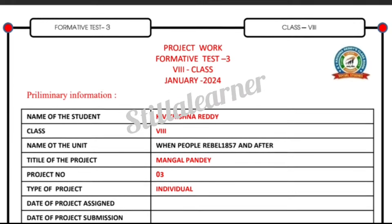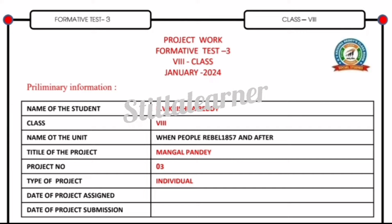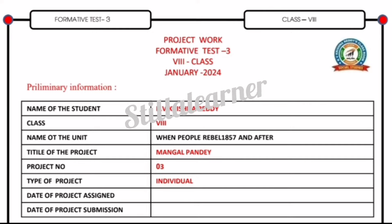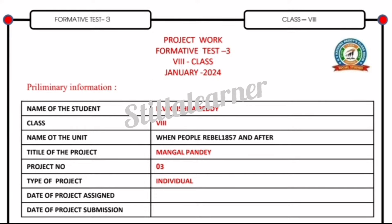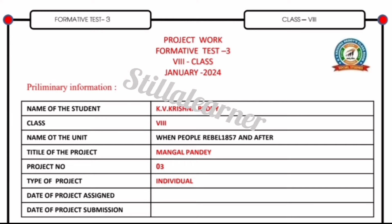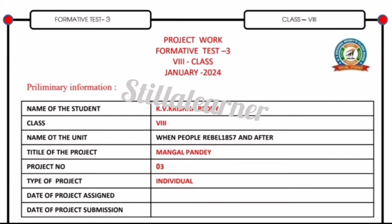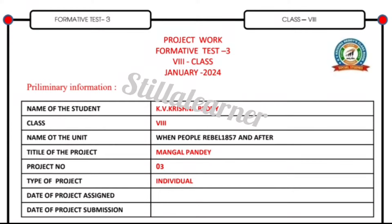First, write down: 'Project Work, Formative Test 3, Class 8, January 2024.' Next, under preliminary information, you have to write down your name, then class, then the name of the unit from which you are taking this topic.